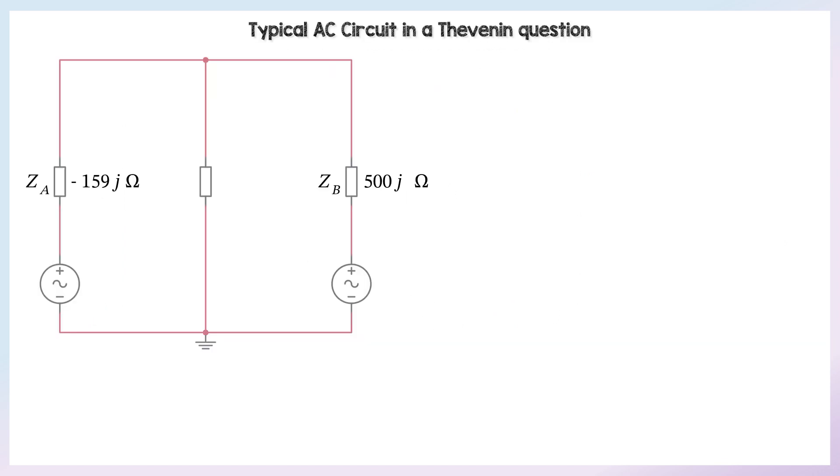So here's a typical AC Thevenin question that you might get. We've got two voltage sources. We've got ZA on the left and ZB on the right. We've got 230 sine, that's the amplitude, 230 volts of sine wave. V1 and V2 is a sine wave that's leading by 90 degrees, called a cos wave. And then we've got a load in the middle.